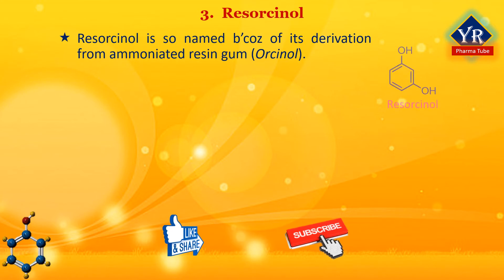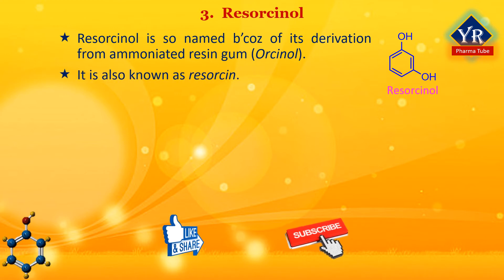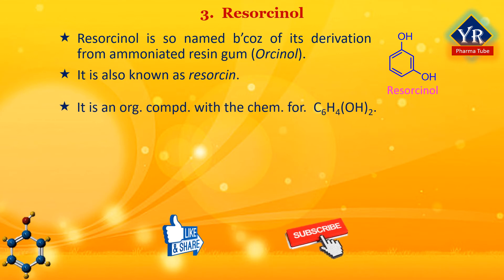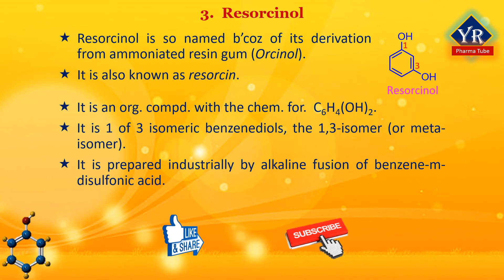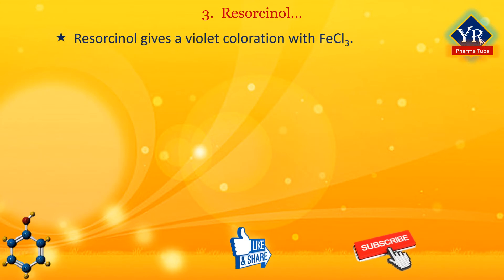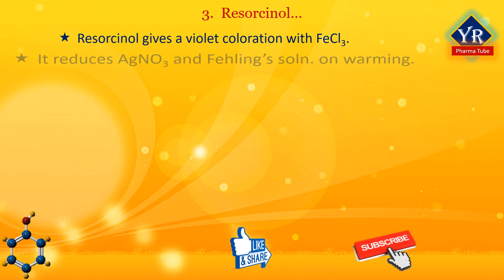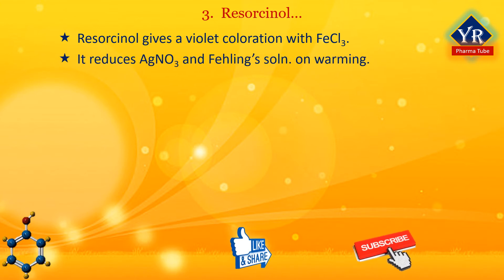Resorcinol is so named because of its derivation from ammoniated resin gum and its relation to the chemical orcinol. Resorcinol is also known as resorcin. It is an organic compound with the formula C6H4(OH)2. It is one of the three isomeric benzene diols, specifically the 1,3-isomer or meta-isomer. It is prepared industrially by the alkaline fusion of benzene-meta-disulfonic acid, and is also formed when benzene-para-disulfonic acid or all three bromobenzene sulfonic acids are fused with alkali. It is a colorless crystalline solid with a melting point of 110°C, very soluble in water, ethanol and ether. Its aqueous solution gives a violet coloration with ferric chloride solution. It is not as powerful a reducing agent as the ortho- and para-isomers, but it will reduce silver nitrate and Fehling's solution on warming.